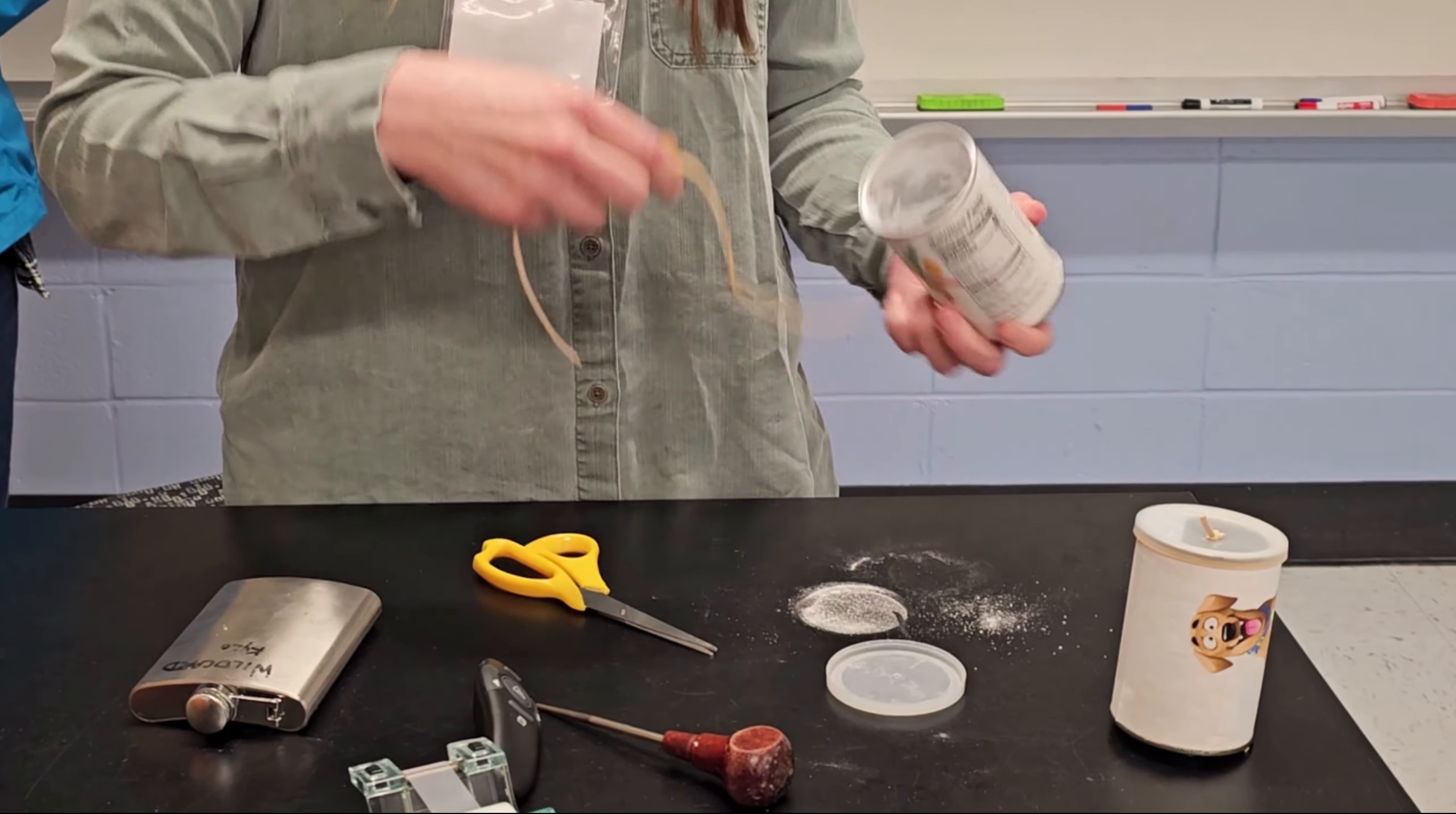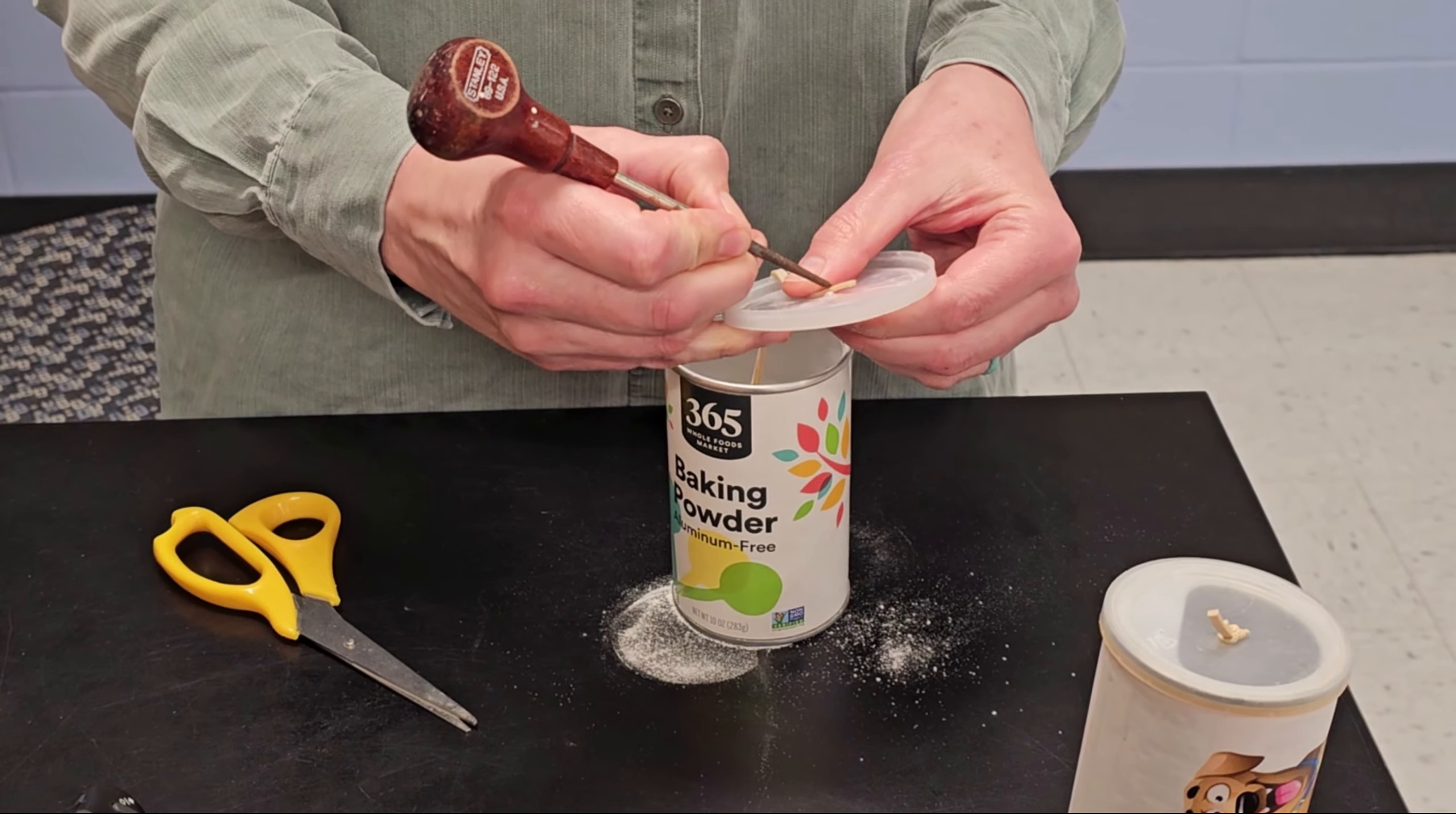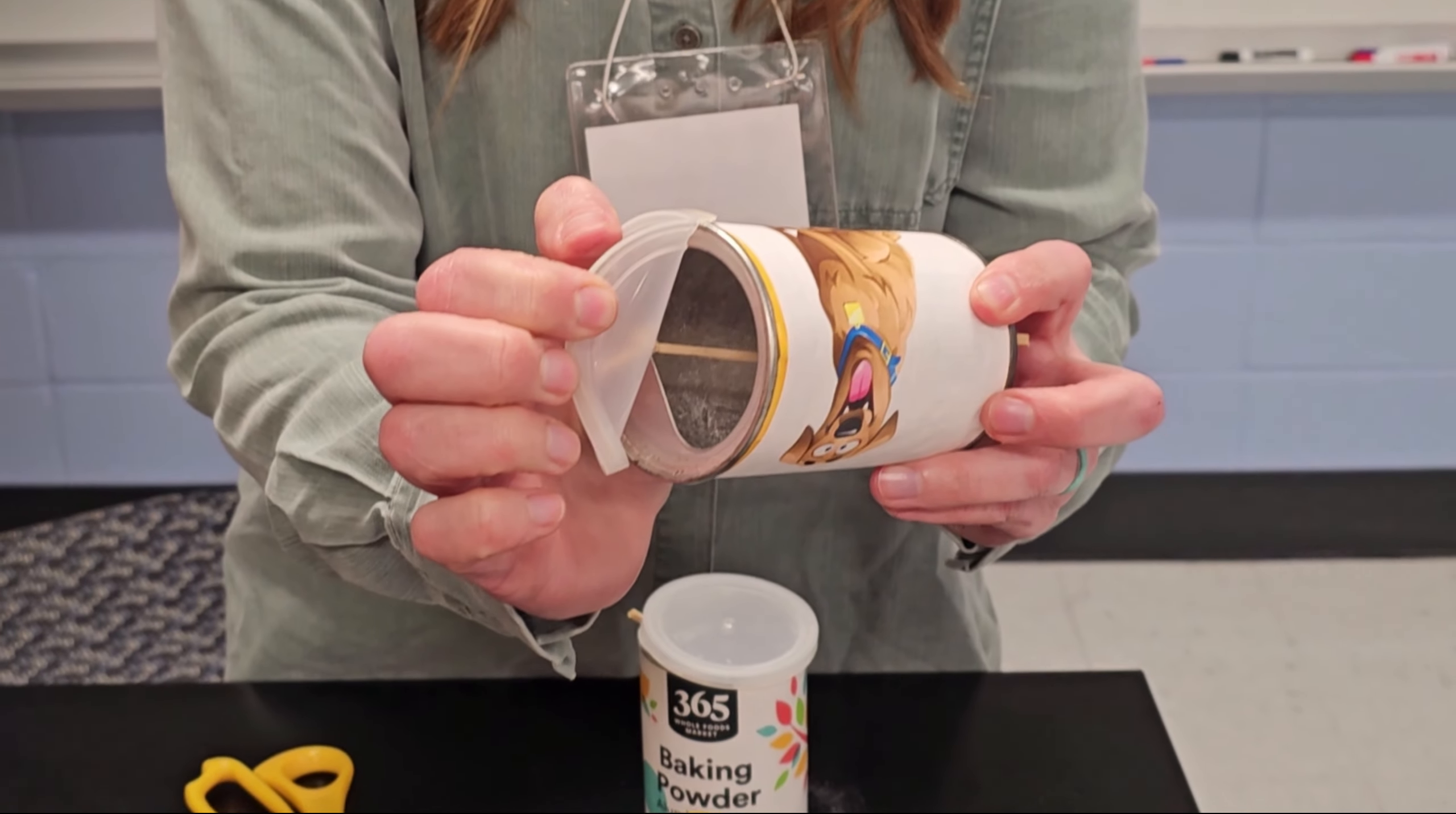And then, you just simply run it through the can, run that through the lid. You just tie knots on either outsides. You want to make sure it's nice and tight, otherwise it doesn't coil very well. And then you have your rollback can.